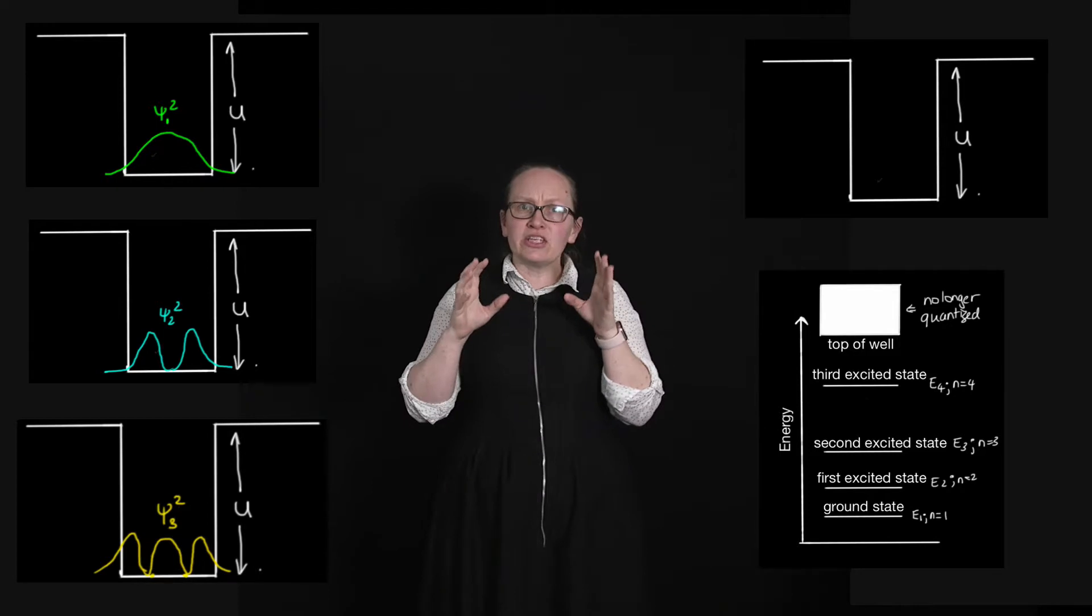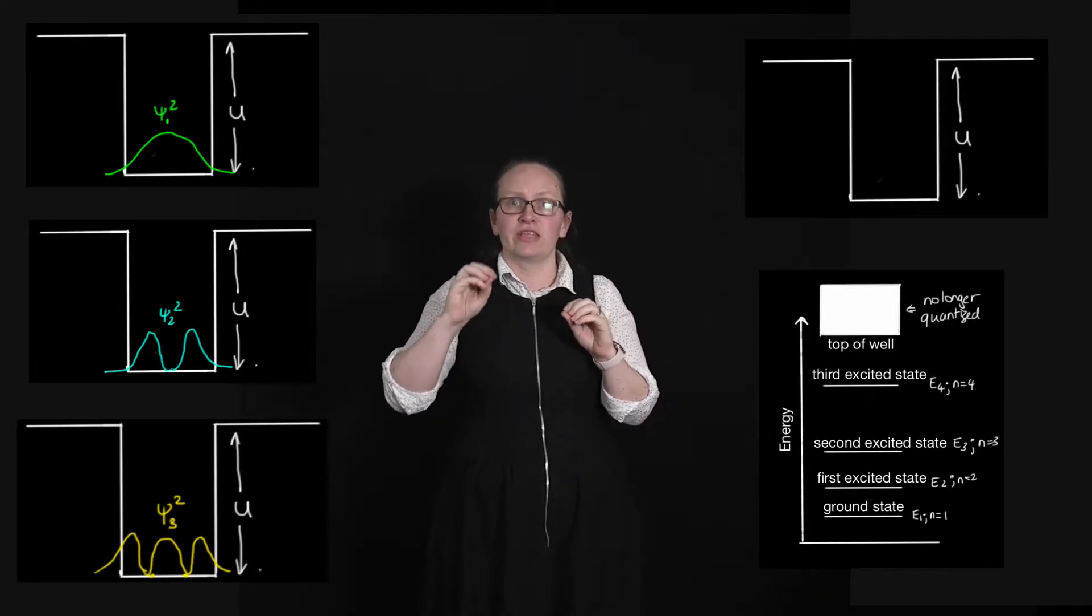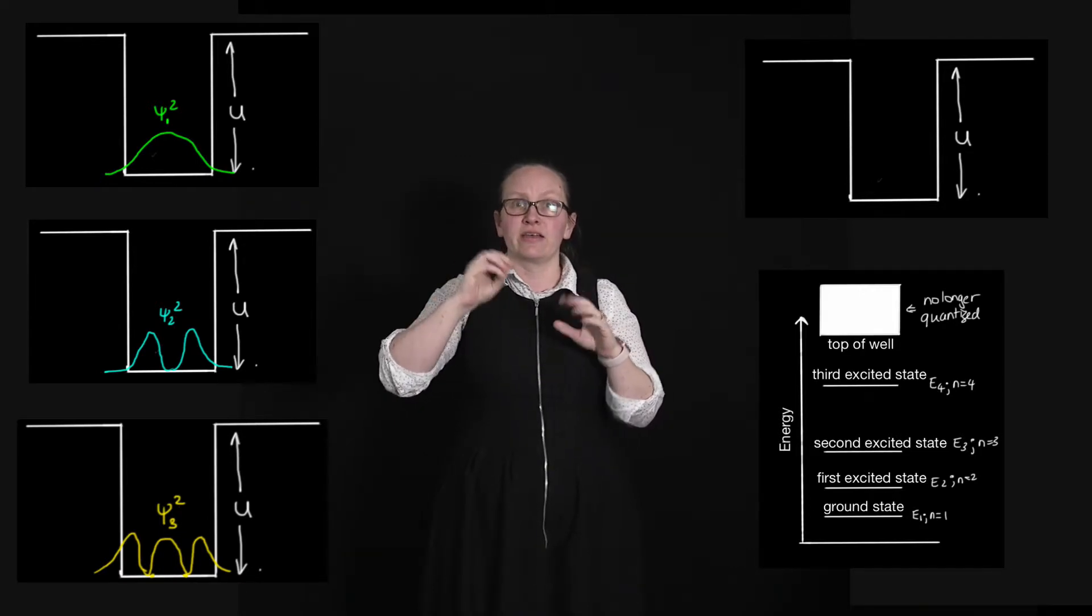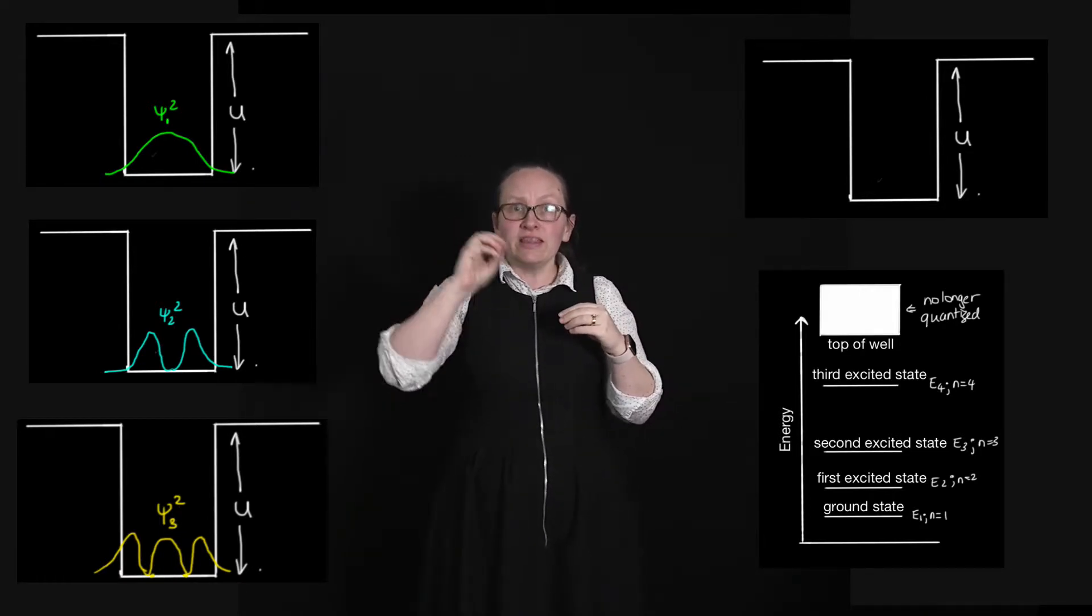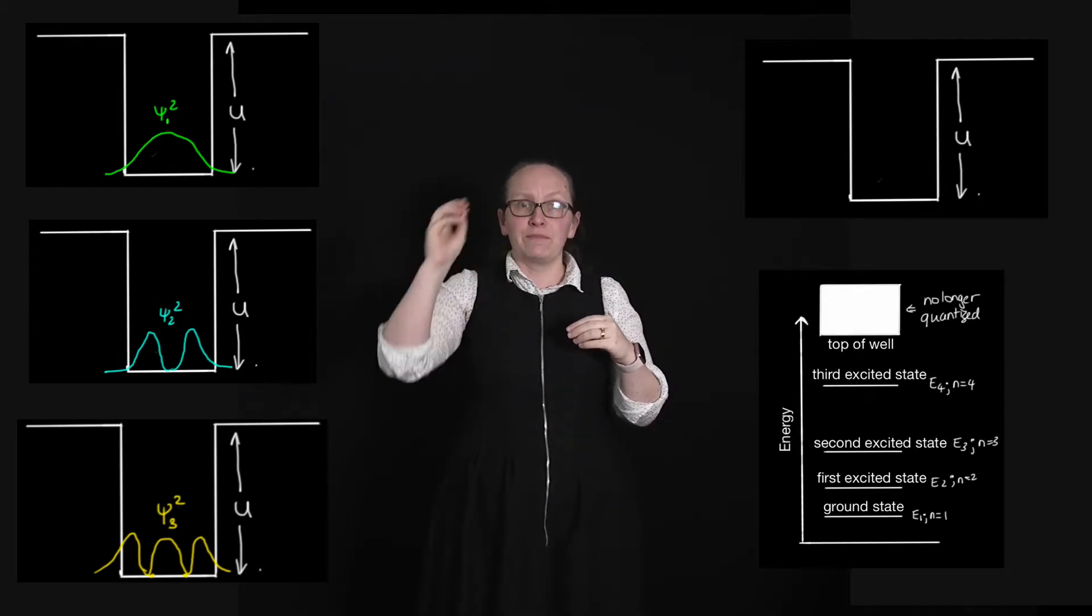Where the energy levels are very different in the finite well is when we get an electron whose energy is greater than the energy of the potential, greater than u. In this case for the finite well that electron is actually unbounded.